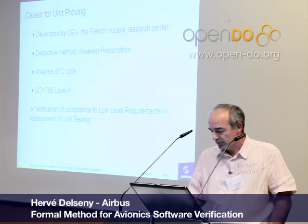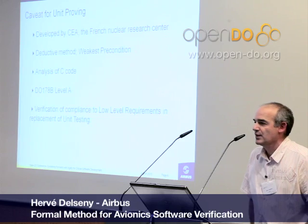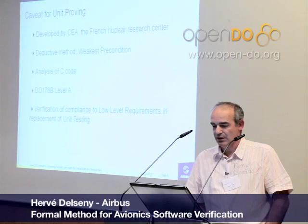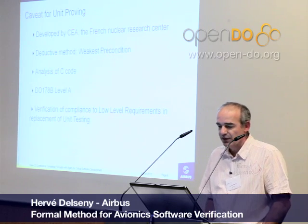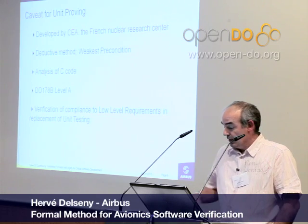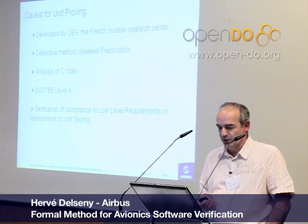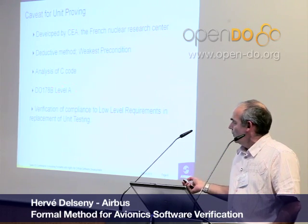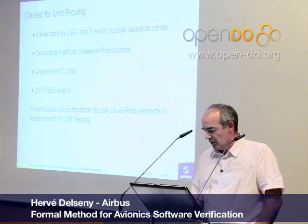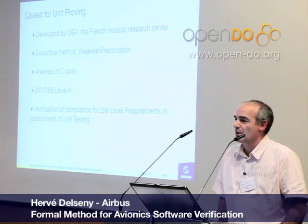The second type of formal method is the use of CAVEAT for unit proof of functional properties instead of testing. CAVEAT is developed by CEA, the French Nuclear Research Center. It is based on a deductive method — theorem proving — and works on C code, not on binary. We use it on Level A software, more precisely on a subset of the primary computer of the flight-by-wire system on A380, A400M, and A350.